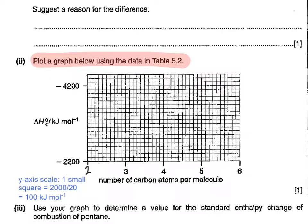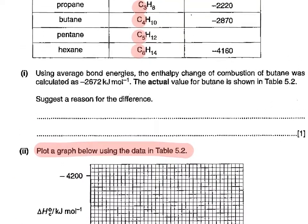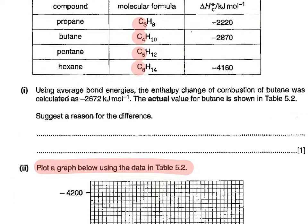We wanted minus 2220. My first point is actually very close to the origin. Going back to my data, for four carbons, it's minus 2870.